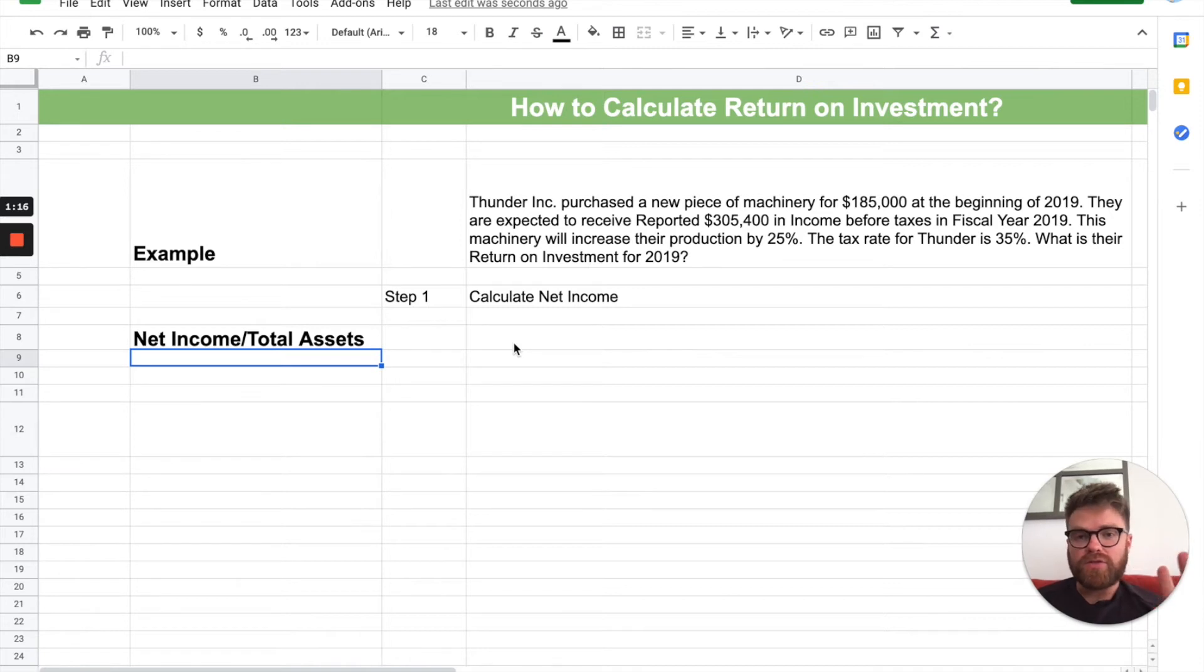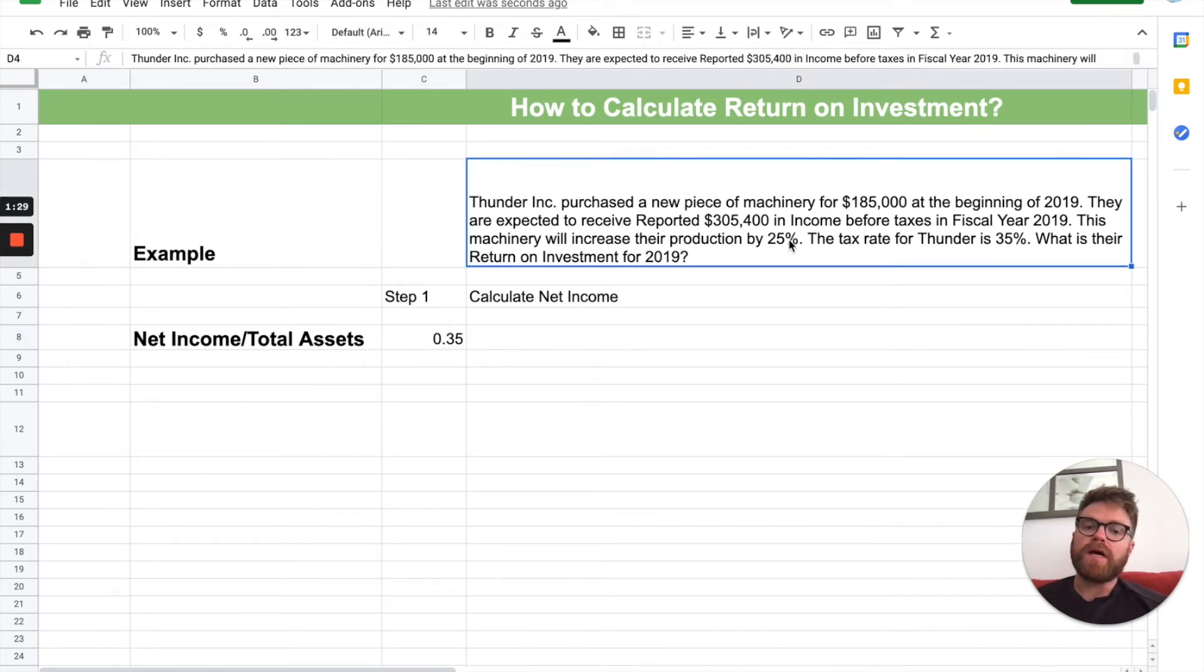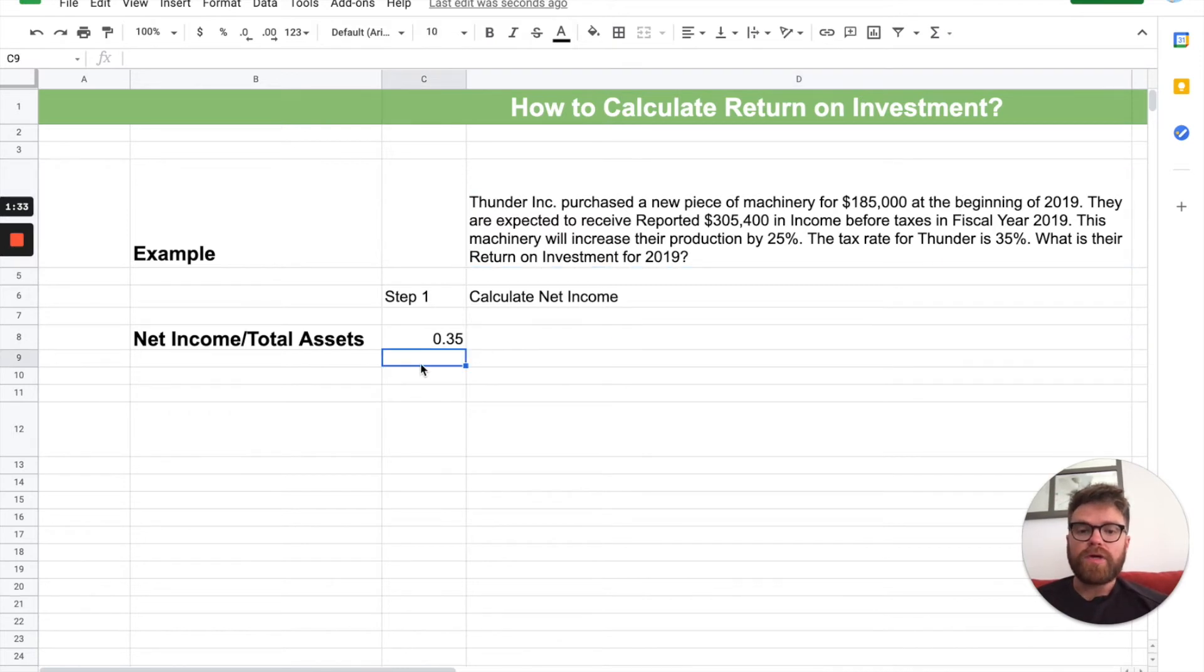So, to do that, there's actually two ways to do it. I'm going to show you both ways. First off, let's get the tax rate. The tax rate is 0.35. So, I'll make that big here. Remember, tax rate for Thunder is 35%. Not 25%, 35%. And we also know the income before taxes is $305,400.